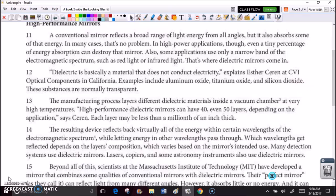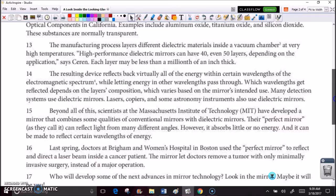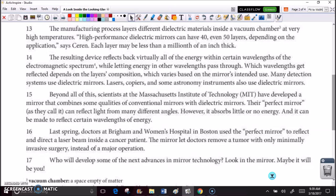Dielectric is basically a material that does not conduct electricity, explains Esther Sirin at CVI Optical Components in California. Examples include aluminum oxide, titanium oxide, and silicon dioxide. These substances are normally transparent. The manufacturing process layers different dielectric materials inside a vacuum chamber at very high temperatures. High-performance dielectric mirrors can have 40, even 50 layers, depending on the application, says Sirin. Each layer may be less than a millionth of an inch thick.